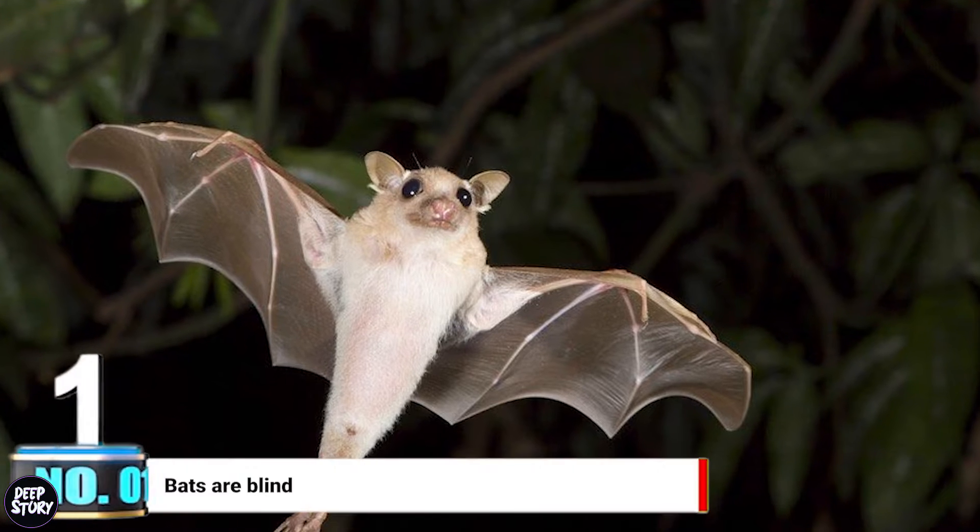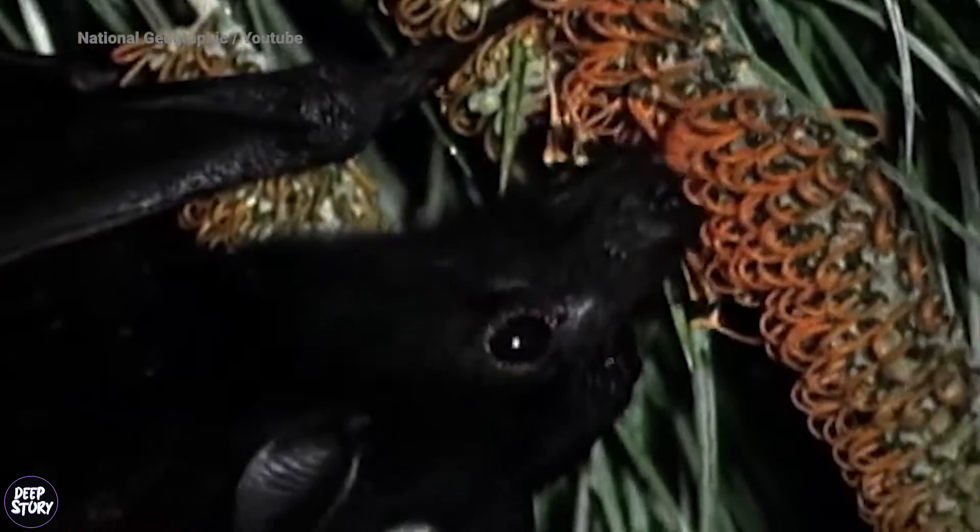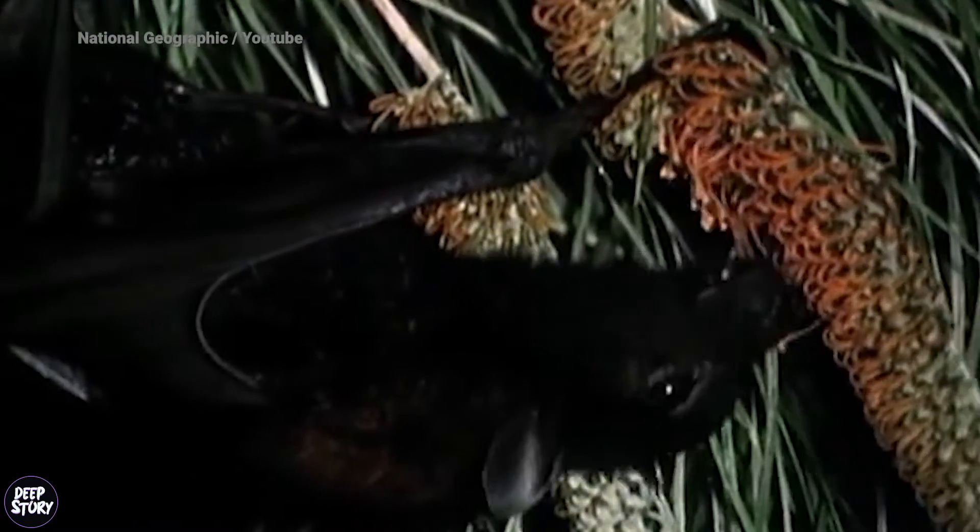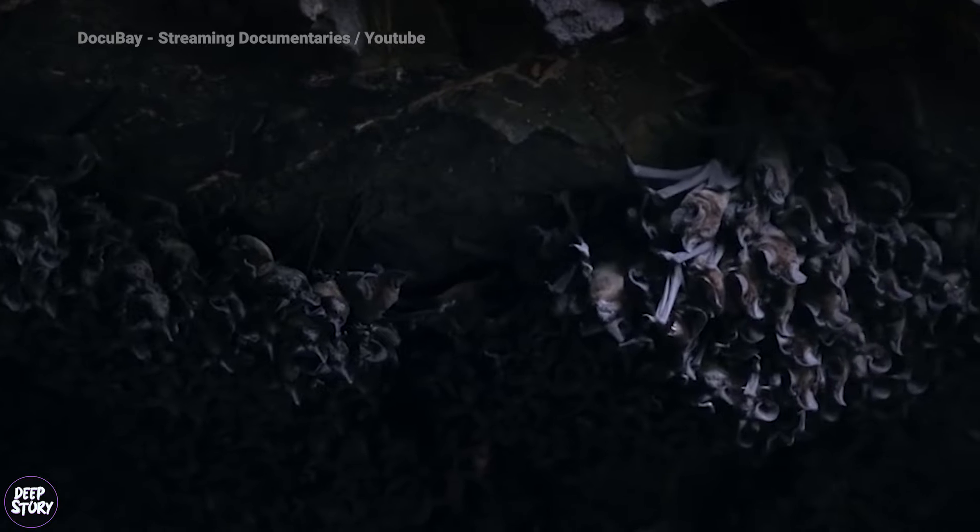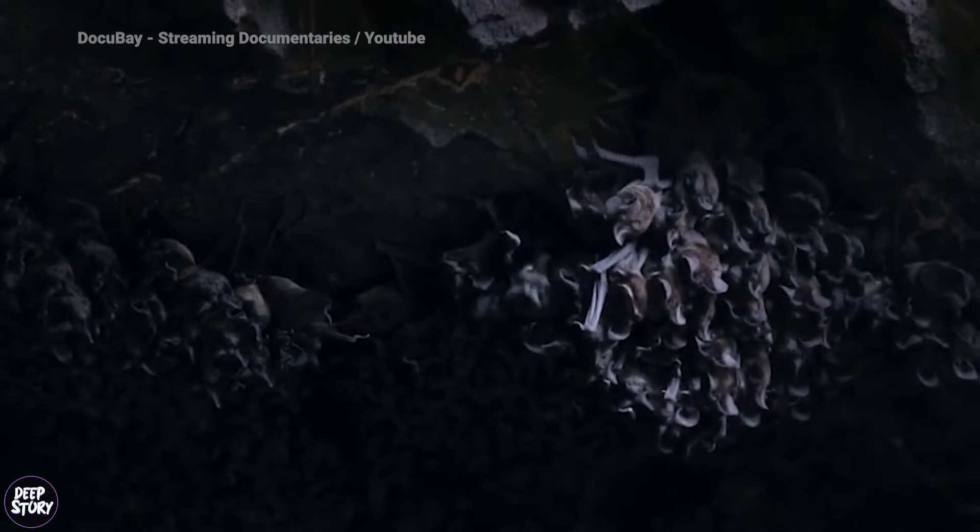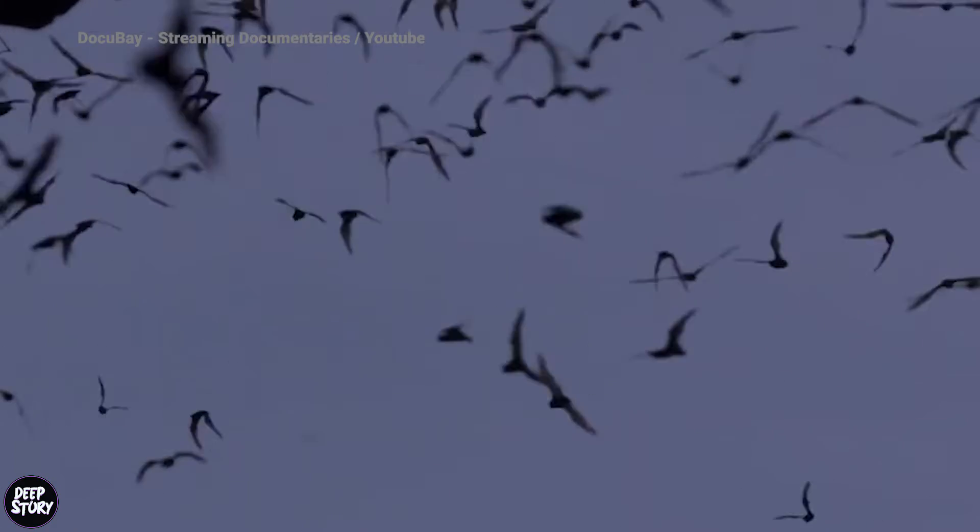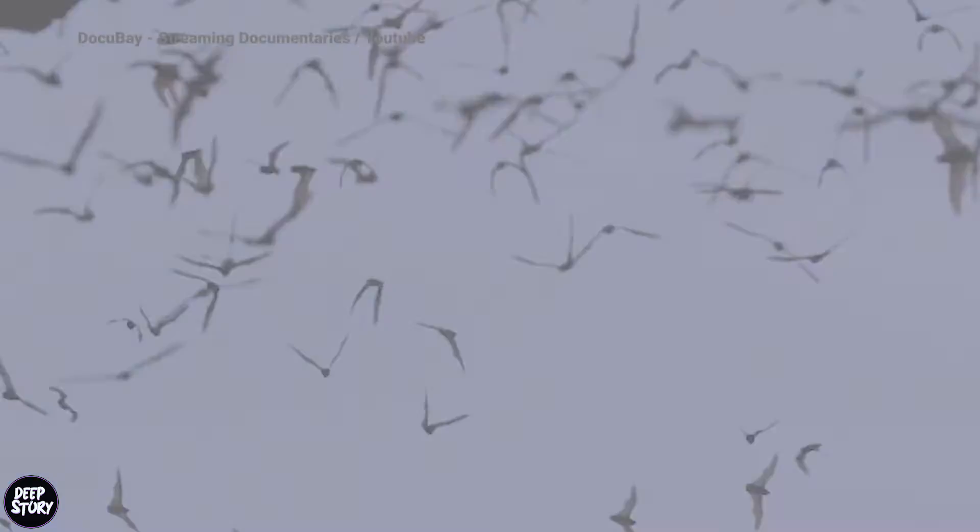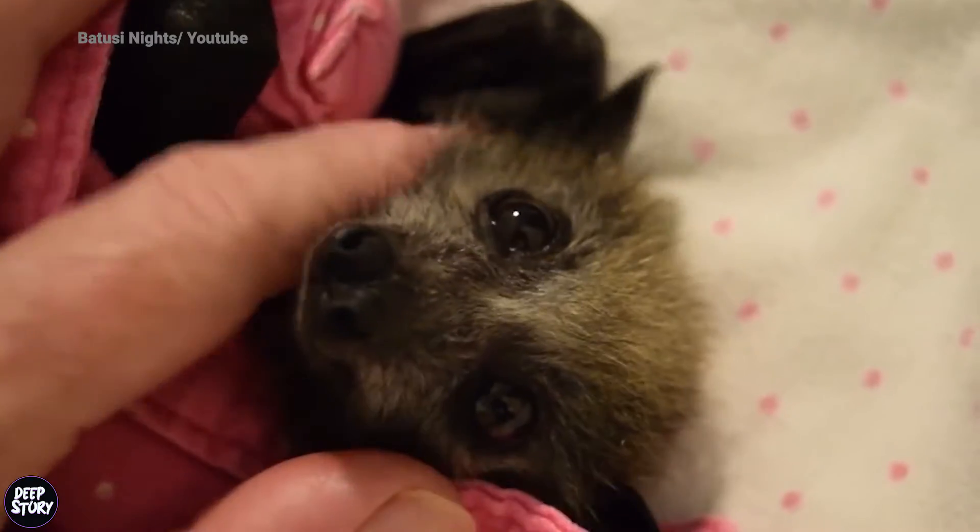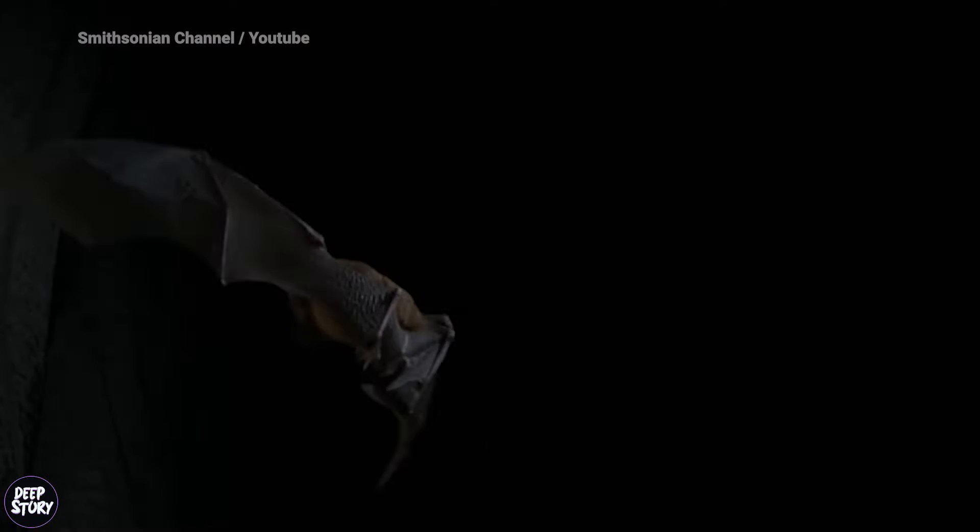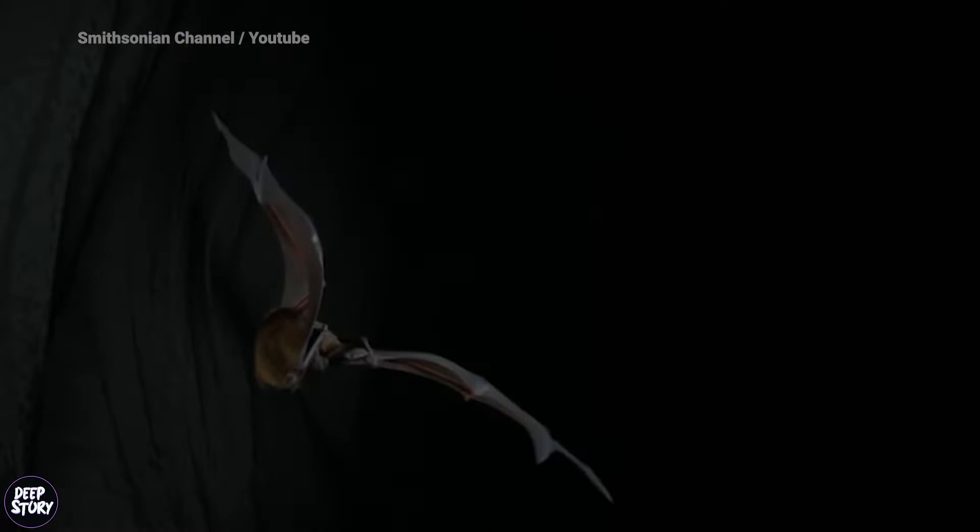Number 1: Bats are blind. Everyone considers bats to be blind since they are nocturnal creatures and are extremely good hunters when it's totally dark outside. But the truth is, they are not blind. So how can they see at night then? Well, think of bats like a sonar with wings, since that's pretty much what they are.